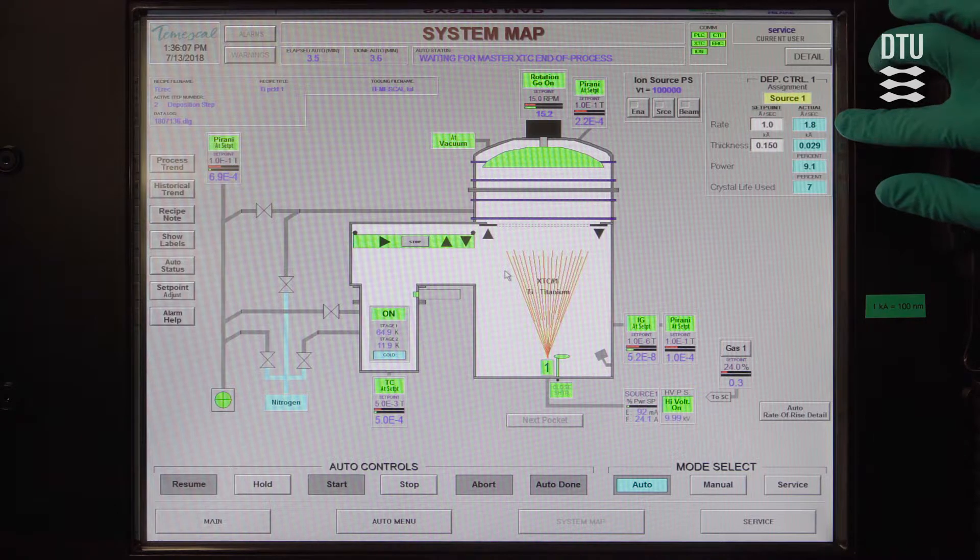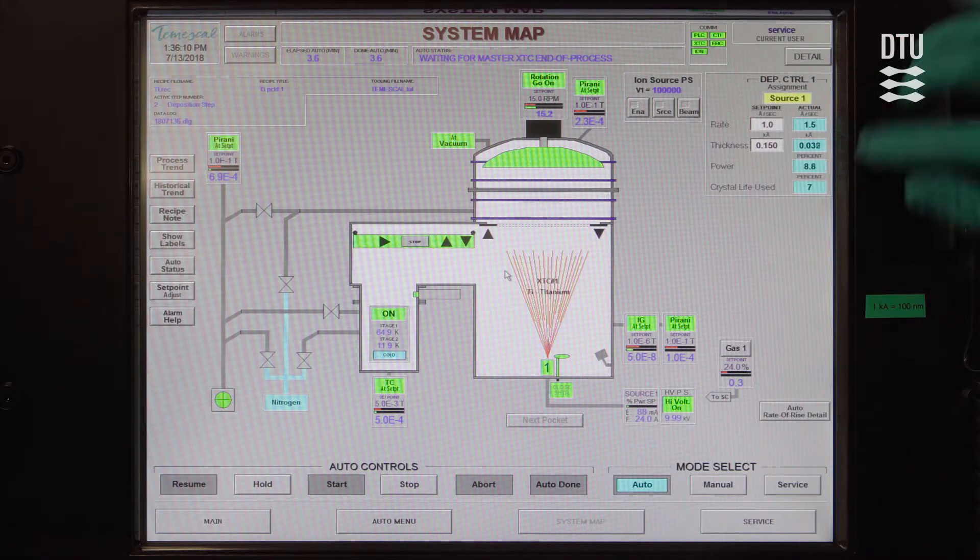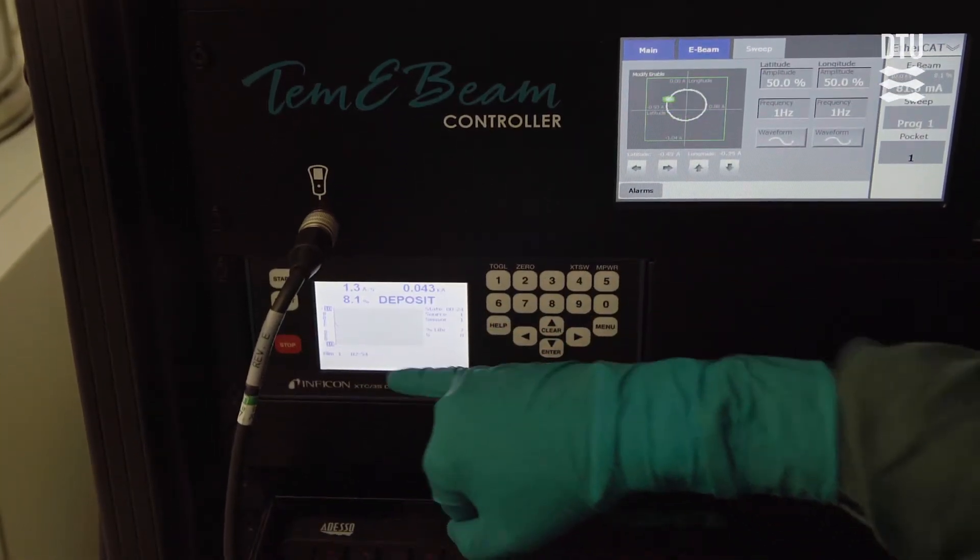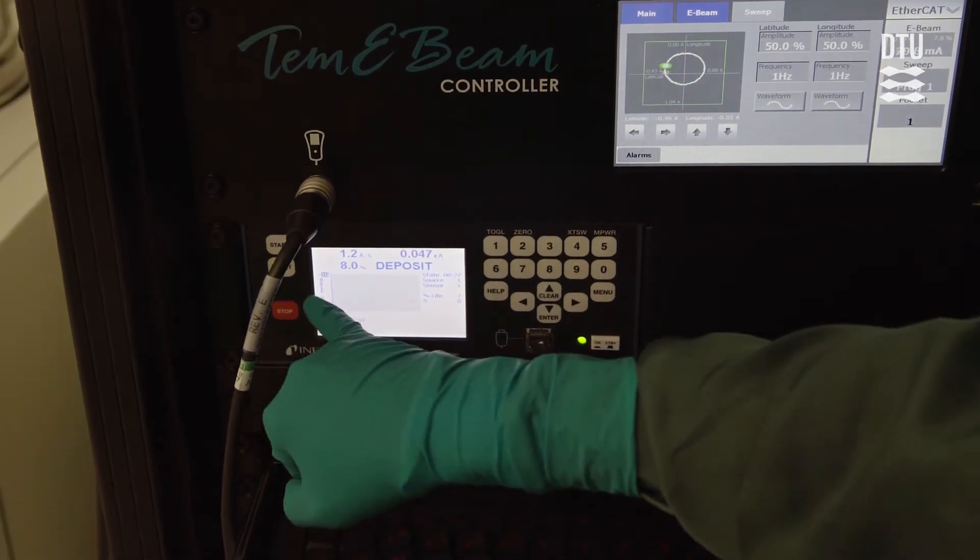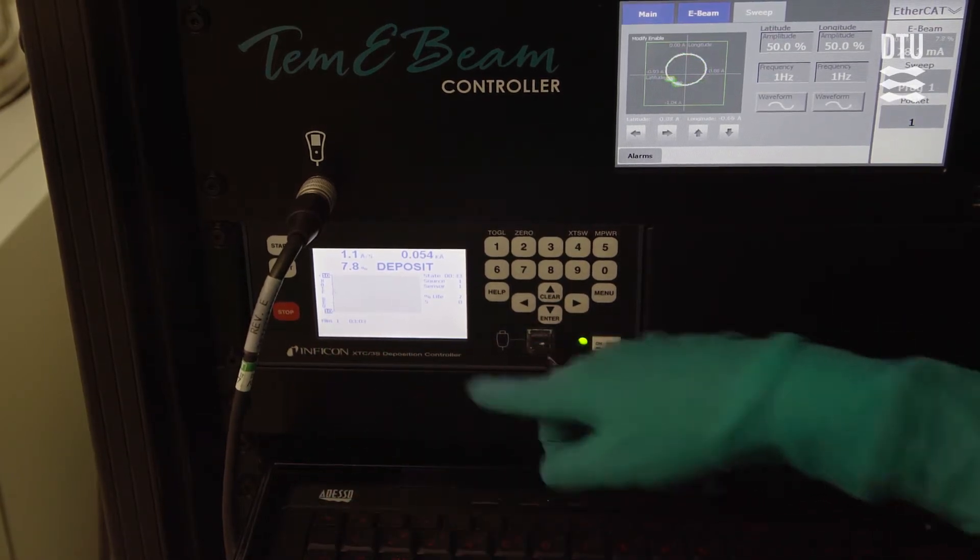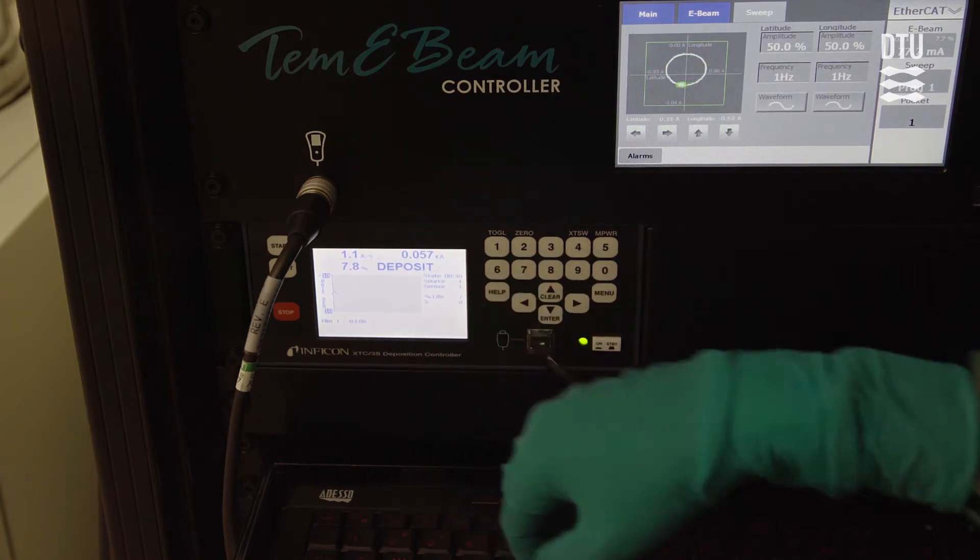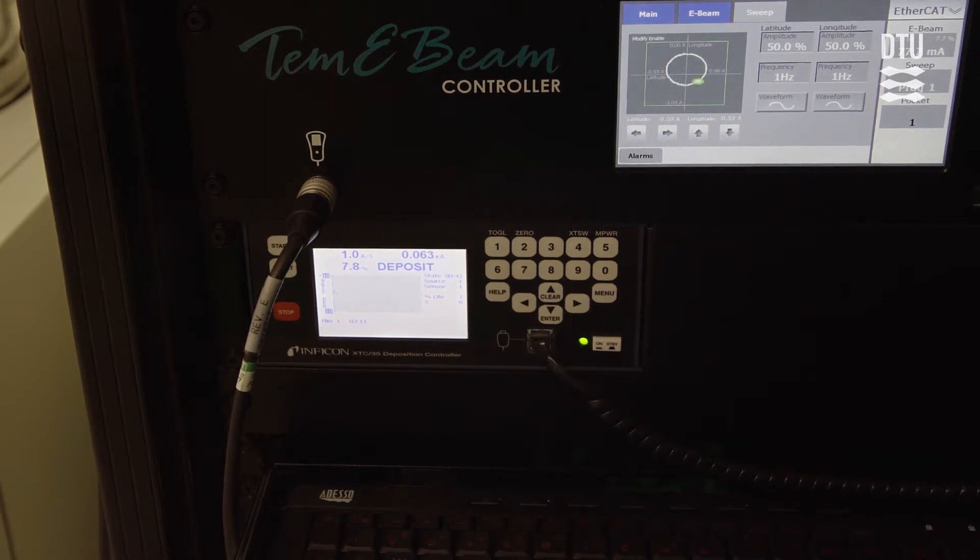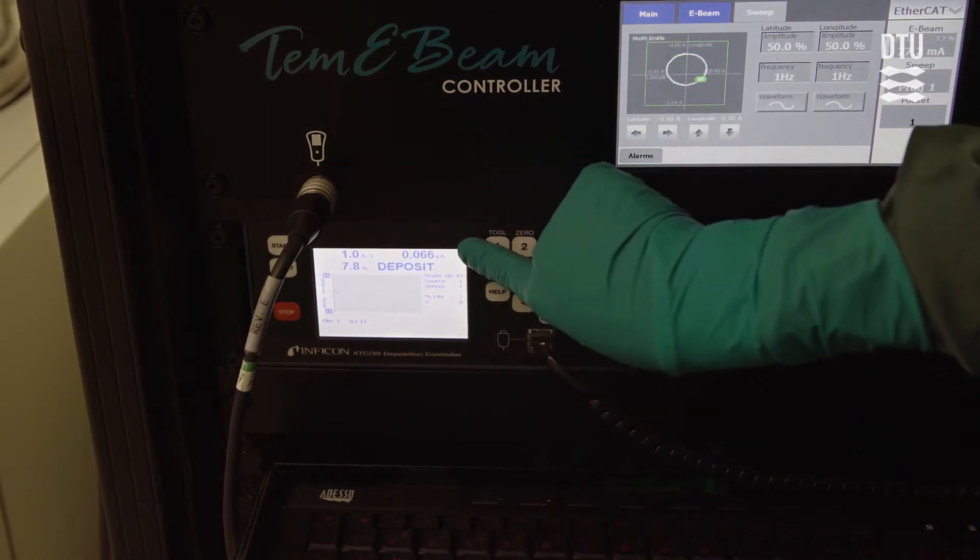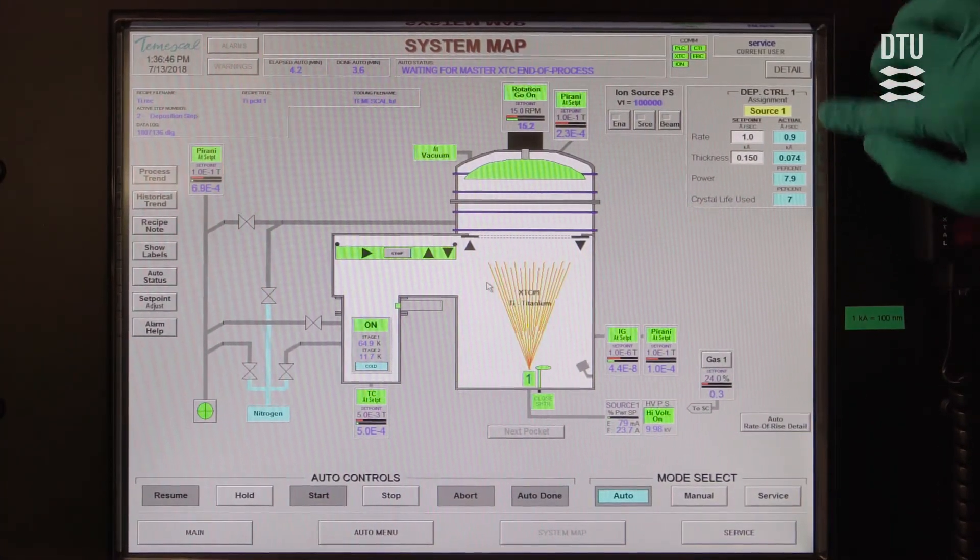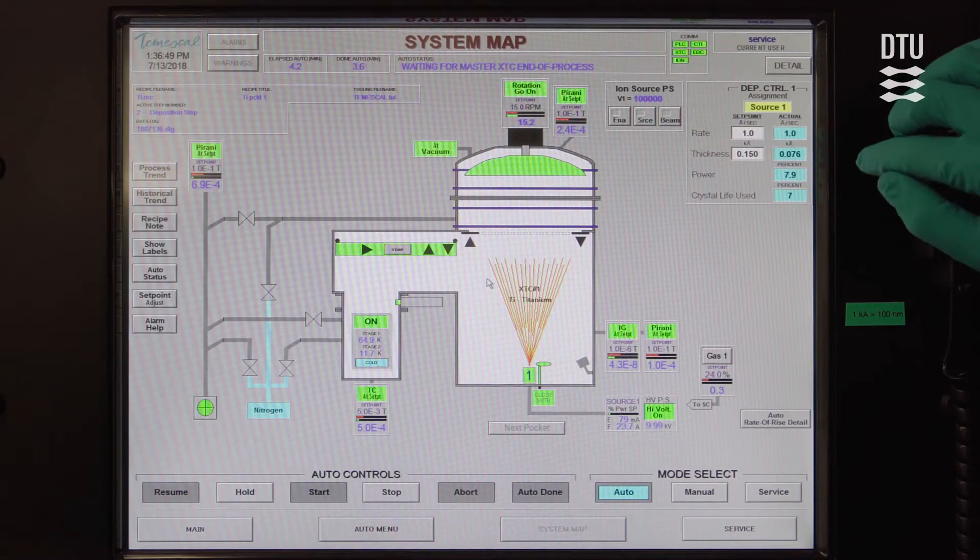You can also see what's happening to the deposition rates and you see that both up here on the right but also in the window for the crystal controller where you can also see the deviation of the rate from what you set. So you can see that we started out with a slightly too high deposition rate and now the machine is adjusting the power, it's lowering the power a bit so that we get a deposition at the rate that we asked for originally. You can also see how thick the actual film is and you can see that both here in the crystal controller and also in the deposition control window in the top right part of the system map.